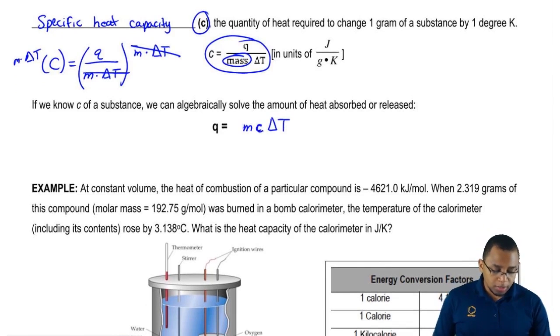Then you say that q equals m c delta T. Just remember q equals m-cat. Just treat the delta sign, the triangle, as an A. That's the easy way for you to remember the equation, q equals m-cat. This is the equation that we use any time they give us specific heat capacity, we know the change in temperature, and they give us the mass of an object.